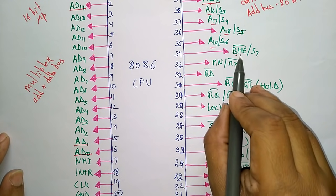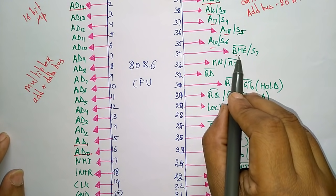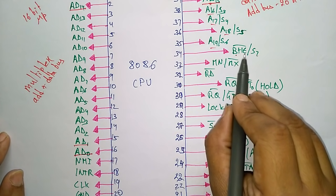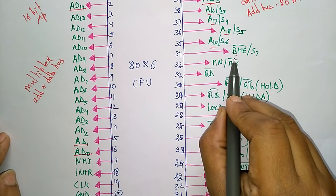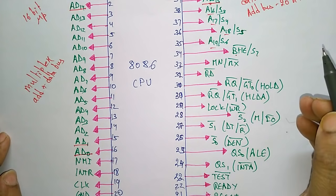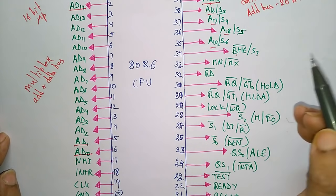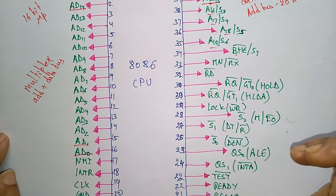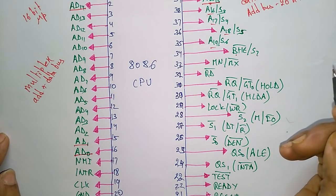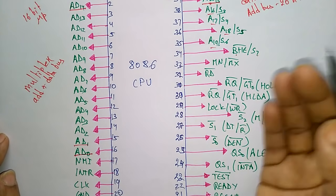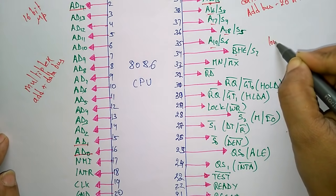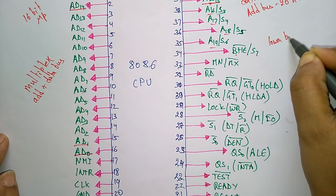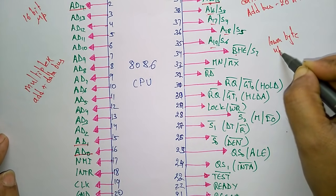Coming to BHE (Bus High Enable): BHE is used to distinguish between the low byte and the high byte of the 16-bit external data bus of the 8086, differentiating the lower byte and upper byte.